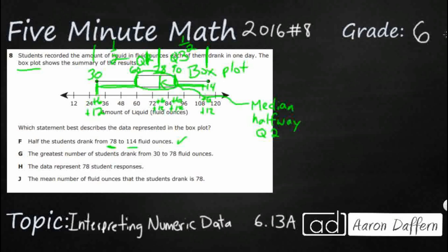Let's see, the greatest number of students drank from 30 to 78. Nope. From 30 to 78 is not the greatest. It's half. Because this line right here, the 78 splits our data in half. So that is not going to work, close, but not going to work.